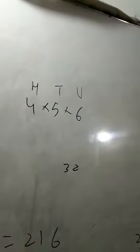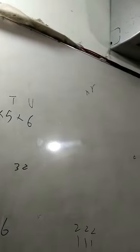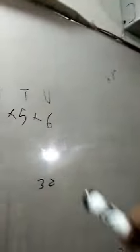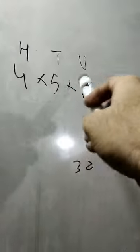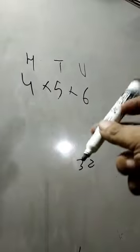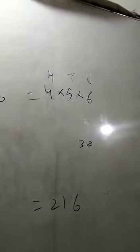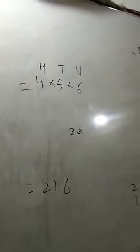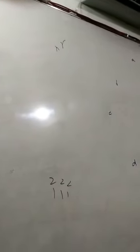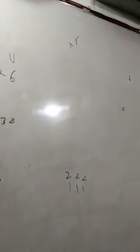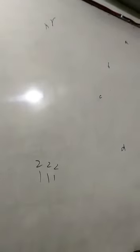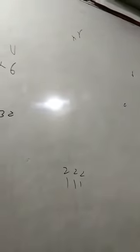But here repetition is not allowed, meaning no digit can be repeated. So the answer is 6 times 5 times 4. Here we can repeat digits, but here we cannot repeat.